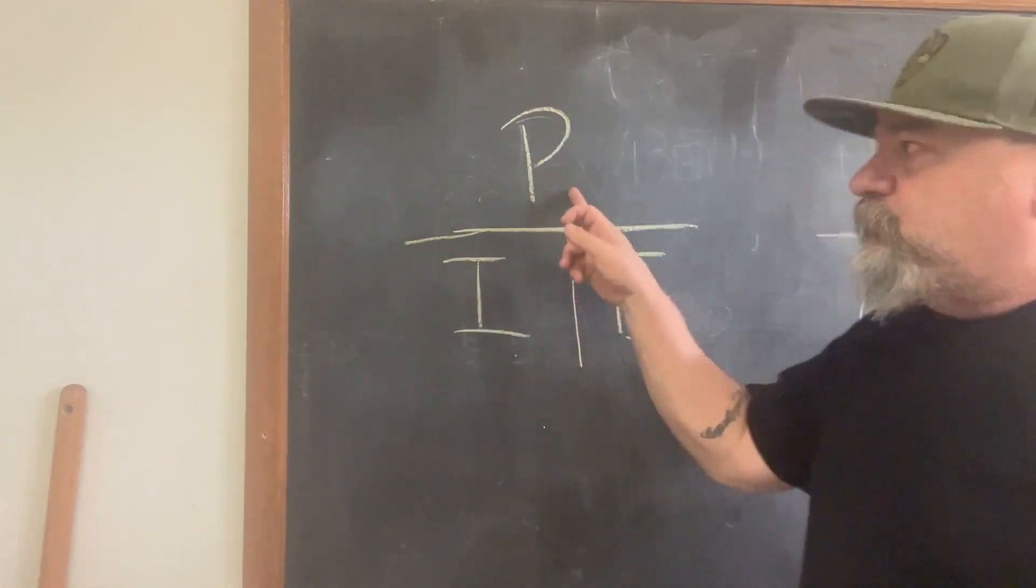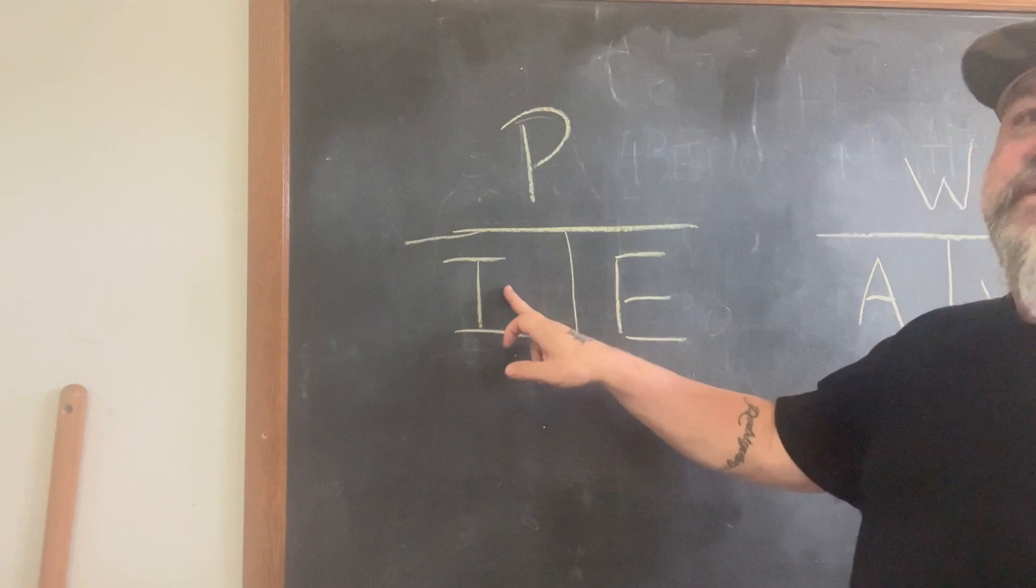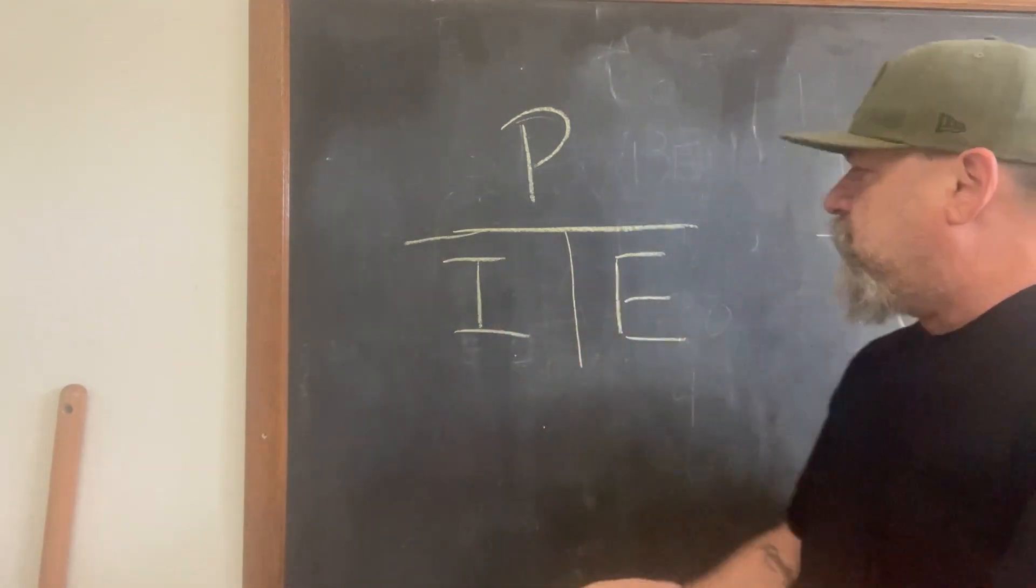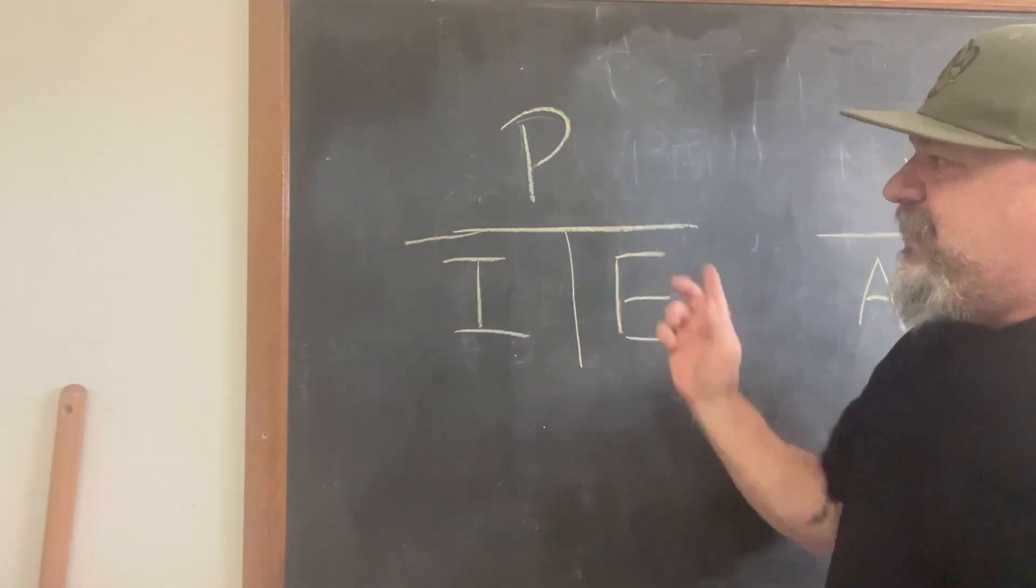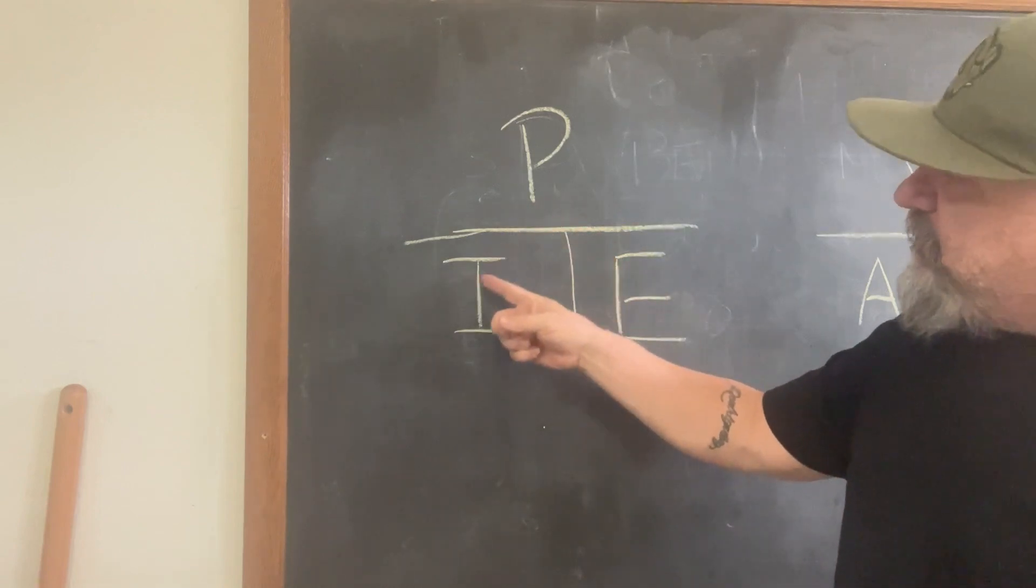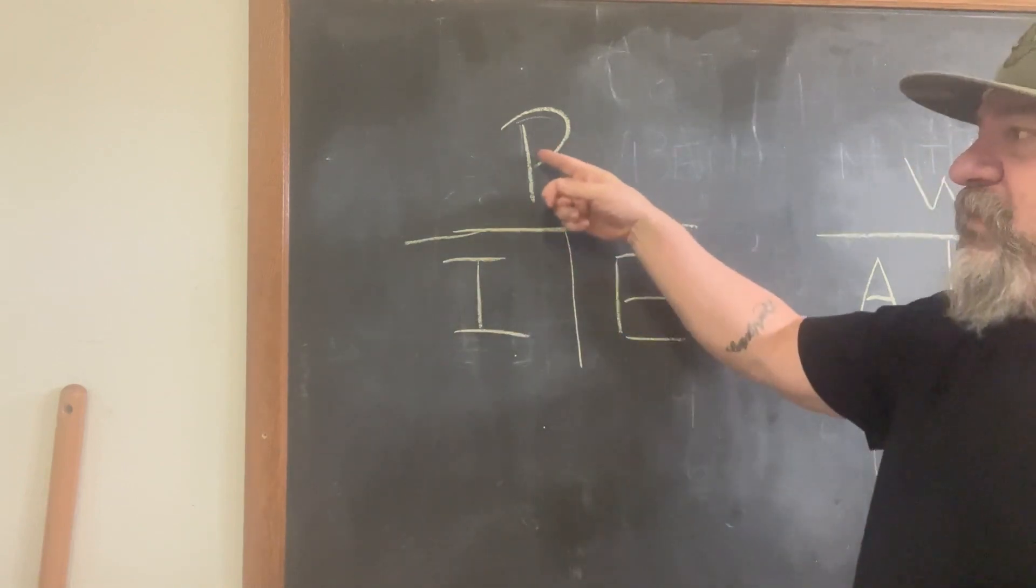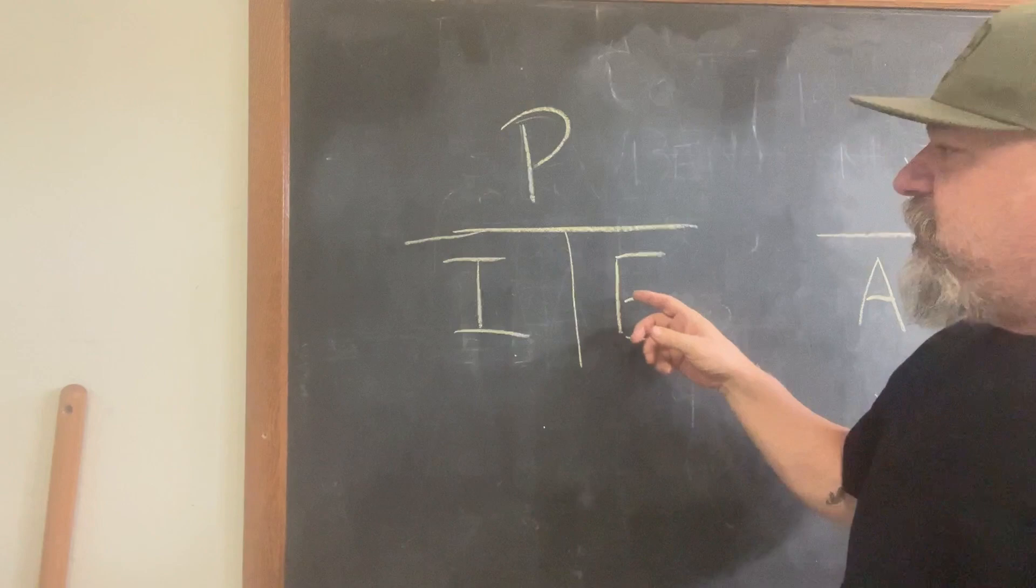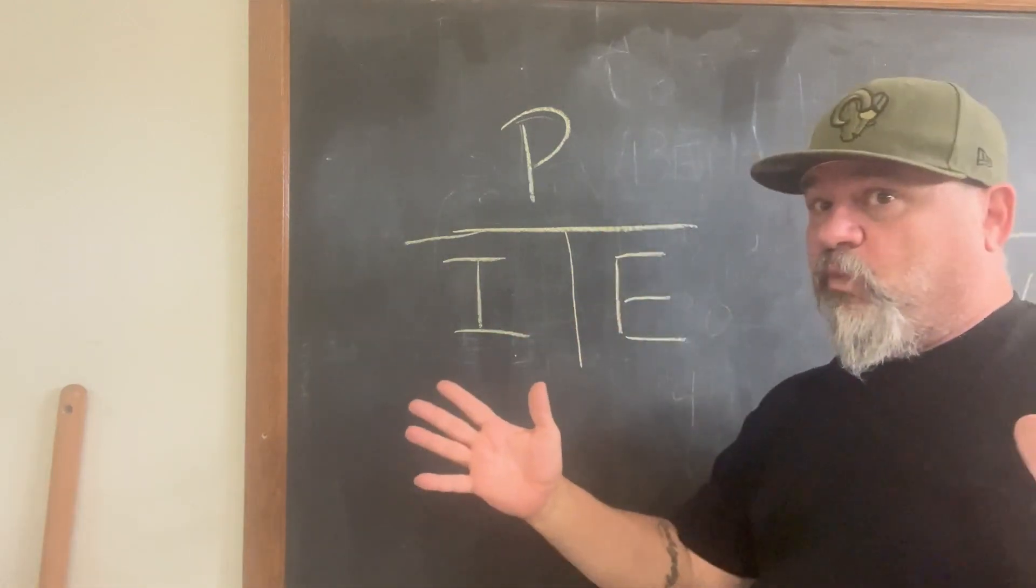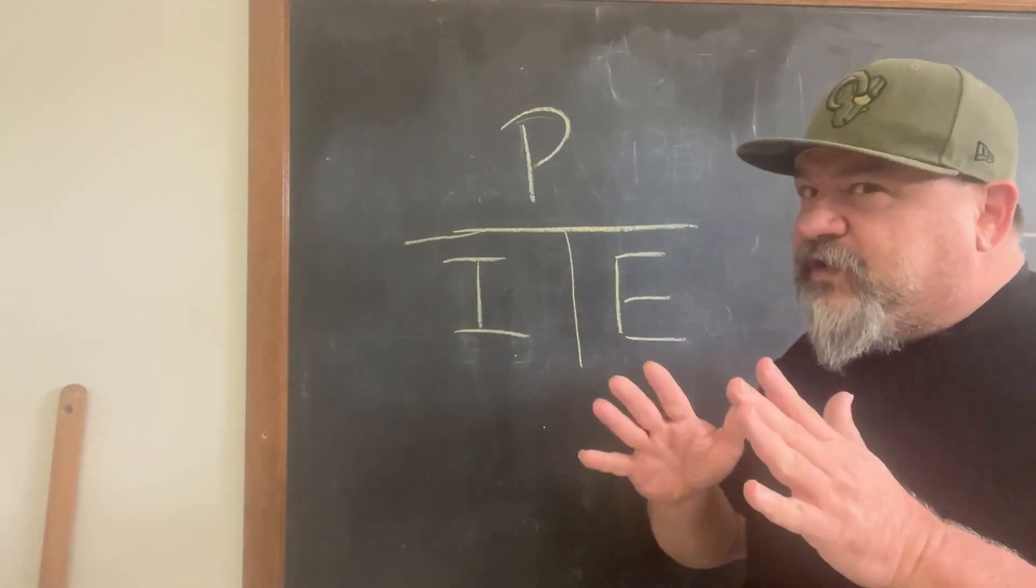P is power. I is current. That is amperage, like your breaker size. E is voltage. PIE. So P divided by I equals E. P divided by E equals I. I times E equals P. You're like, what does that mean? Well, let me explain it to you a little easier.